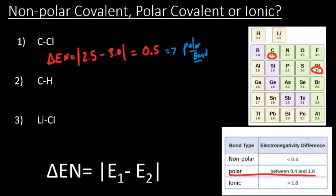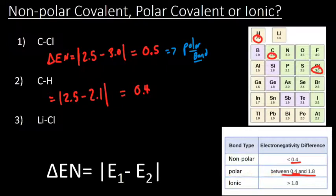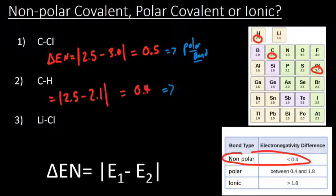For C–H: we grab carbon's value of 2.5 and subtract hydrogen's value of 2.1, giving us 0.4. Technically, that's right on the cutoff between nonpolar and polar. But it's very important to know that C–H is considered nonpolar. It's right there on the edge, but we treat it as nonpolar — that's an important thing to remember.